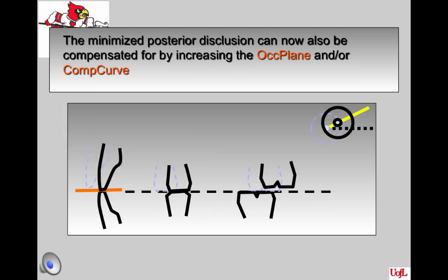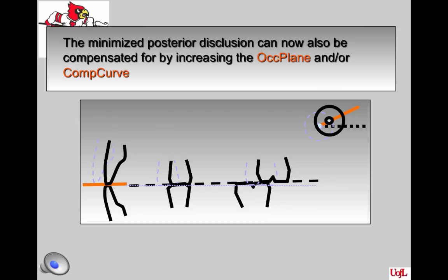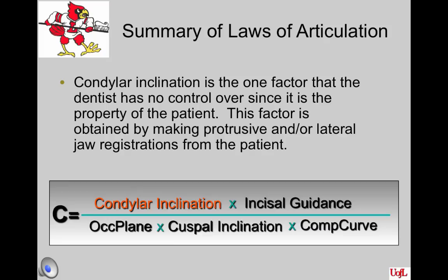The minimized posterior disclusion can also be compensated for by increasing the occlusal plane and/or increasing the compensating curve — we can utilize those two factors on the bottom half of Thielmann's formula. This illustrates raising the occlusal plane to close that space. Here is a summary of some of our laws of articulation.